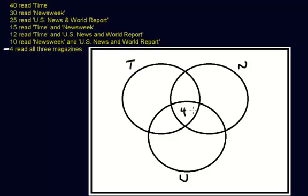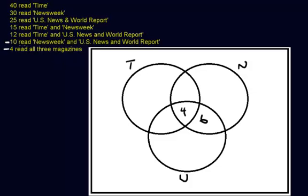Then you backtrack and work your way out, looking for pieces of information that deal with two things. So 10 read Newsweek and U.S. News — that means this intersection region has to add up to 10. We already have 4 in there, so the remaining spot has to be 6. The intersection of Newsweek and U.S. News and World Report adds up to 10, exactly as stated.